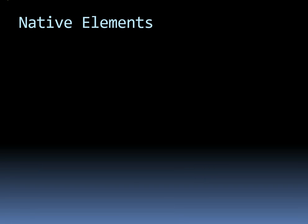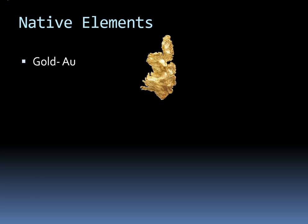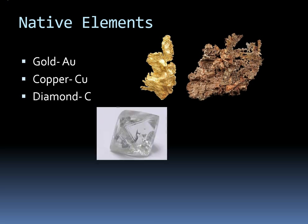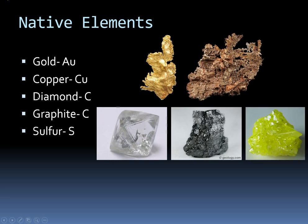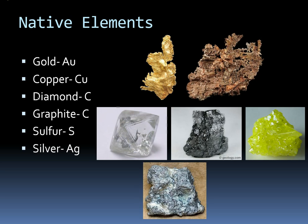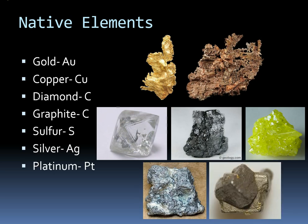Our last type of minerals are the native elements — minerals composed of only one element. Gold is just the element gold, found free in nature. You can find native copper, which is found in Arizona in quite a few places. Diamonds are made of just carbon, and so is graphite. We also have sulfur, which is commonly deposited around volcanoes, and silver and platinum as well. There are lots of other native element minerals in the world, but these are some really common ones.